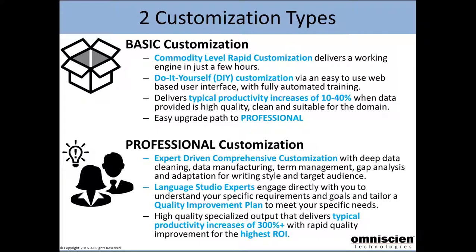This is a collaborative effort where we work together — we do probably at least 95% of the work. There are certain things like managing terminology where the customer has to make some decisions. For example, we analyse your existing translation memories and might find you've translated a term seven different ways. We present those seven different ways and let you choose which you'd prefer. We can also do unknown term analysis, where we analyse content you're planning to translate and make sure all the terminology and vocabulary is covered. These are key steps to building high-quality translations.